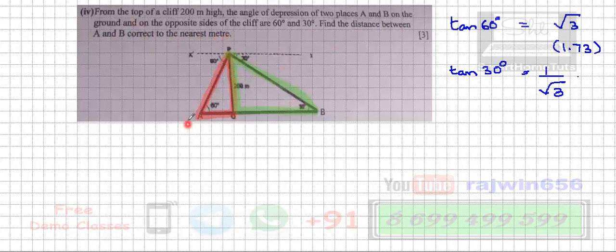Now first I am taking this red triangle which is triangle AQP. The opposite side PQ is 200 meters. I'll find AQ by using the ratio tan 60 degrees, so I'm going to use tan 60.